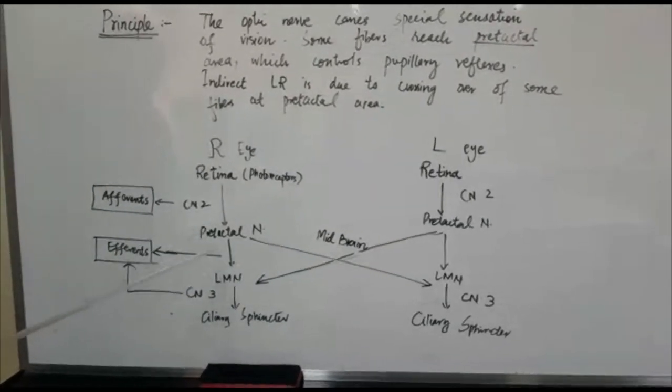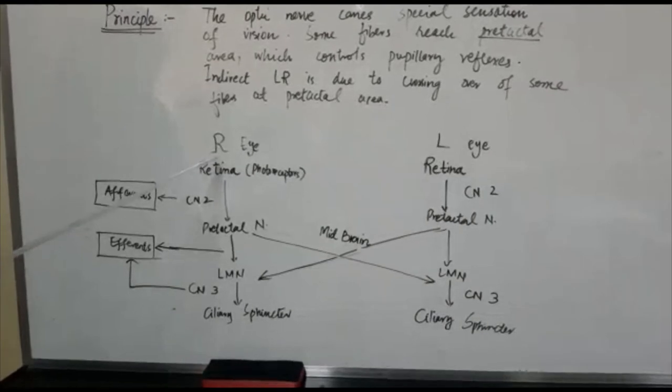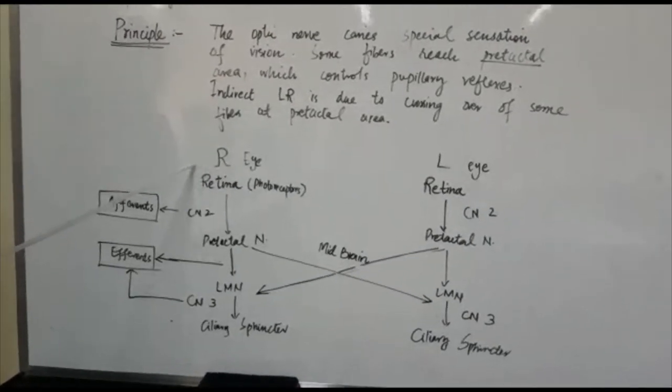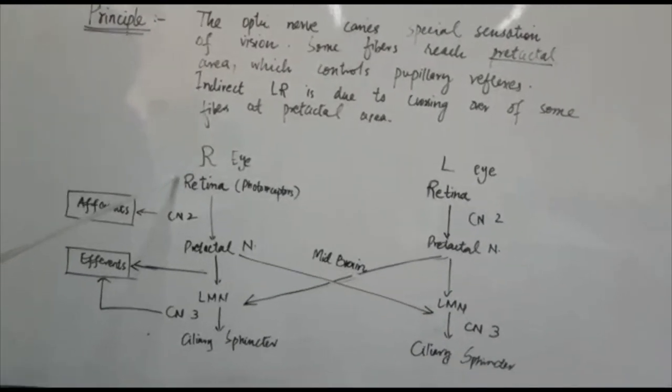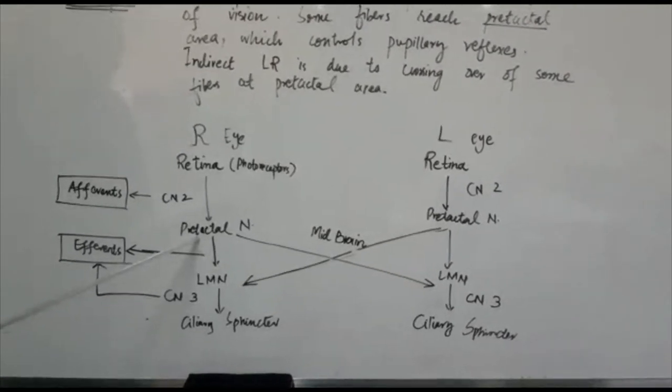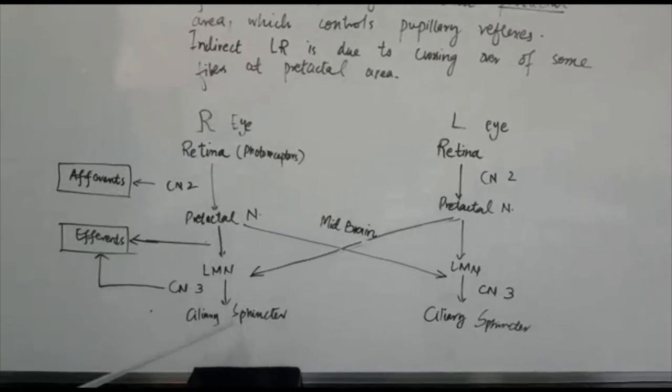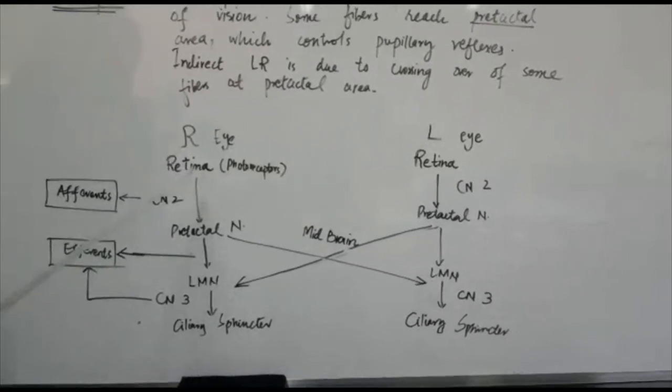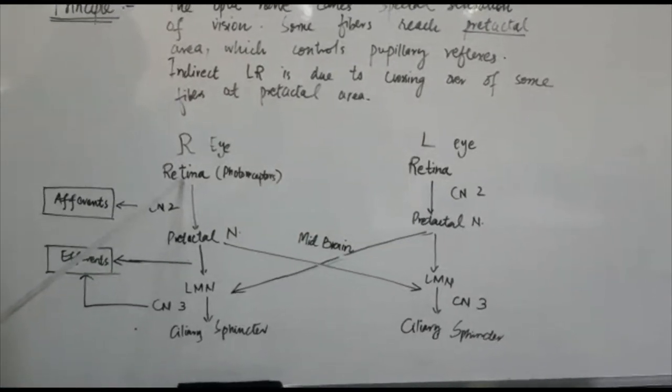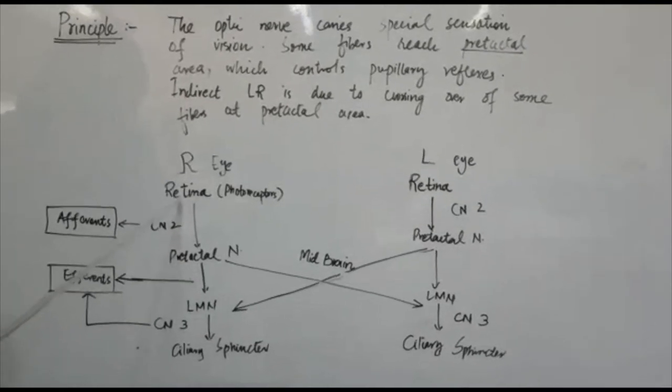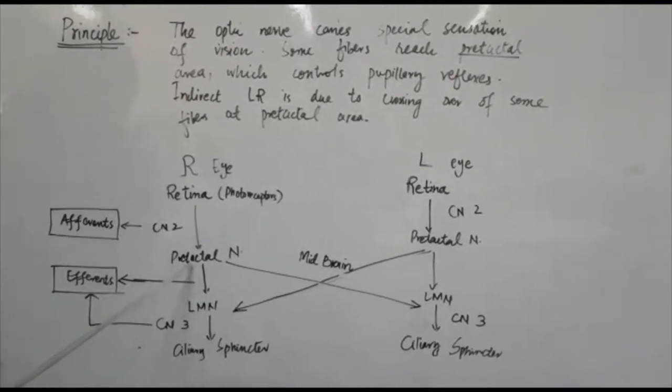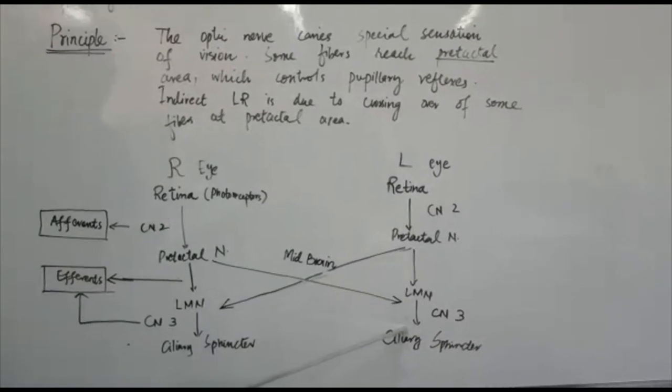So you can see that for the direct light reflex, the reflex pathway followed would be from the retina to the pretectal nucleus and ciliary sphincter of the same eye. Whereas for the indirect consensual reflex, light travels from the retina, then to the pretectal nucleus, and then to the ciliary sphincters of the opposite eye.